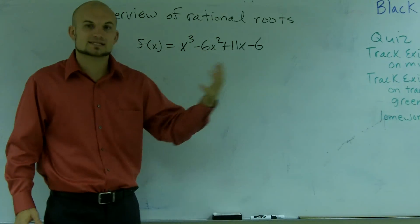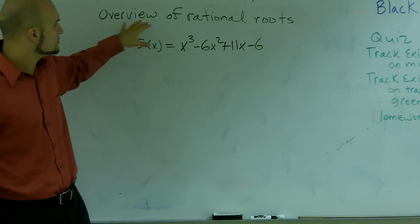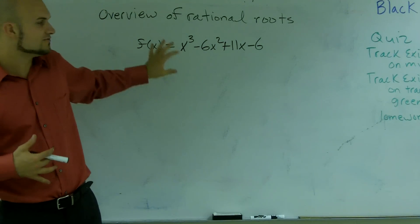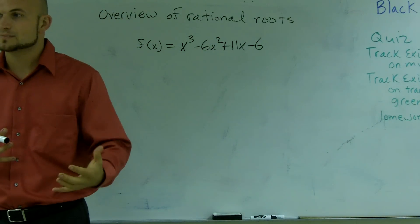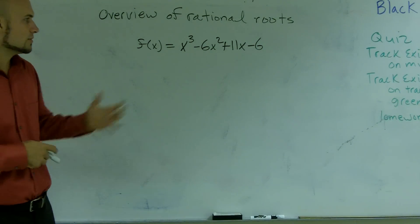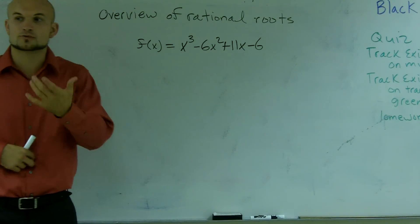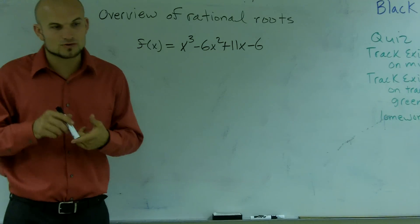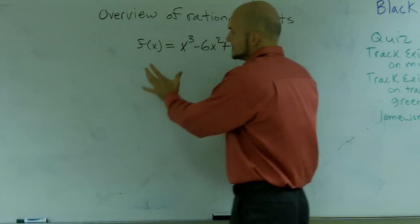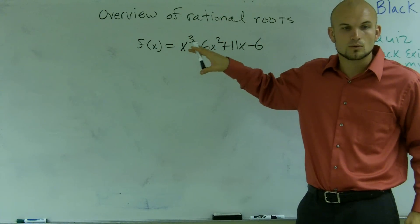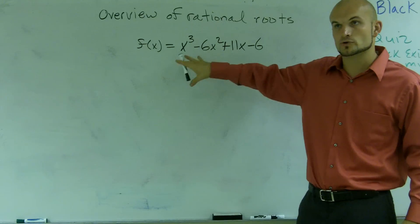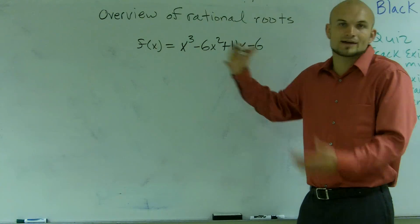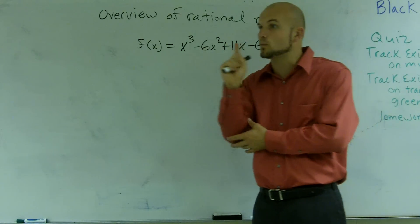So here, I know there has to be a root. We're going to talk about rational roots and roots in general — finding the zeros of the function, which is the same thing. We're trying to find where it crosses the x-axis. The Fundamental Theorem of Algebra states there is going to be at least one zero or root for this polynomial, so by factoring or by using the quadratic formula or whatever method, I'm going to find at least one.